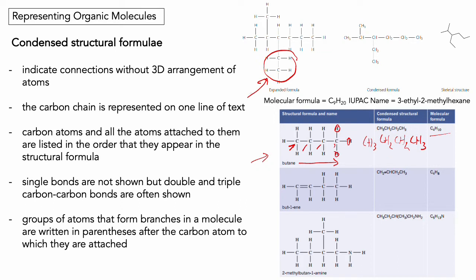For but-1-ene, starting at the left: we have a carbon with two hydrogens and a double bond — remember we include double bonds — so we write CH2= then CH, then CH2, then finally a carbon with three hydrogens, CH3. So the condensed structural formula is CH2=CHCH2CH3. These formulae are still quite long — you're just dropping out the single bonds between atoms.